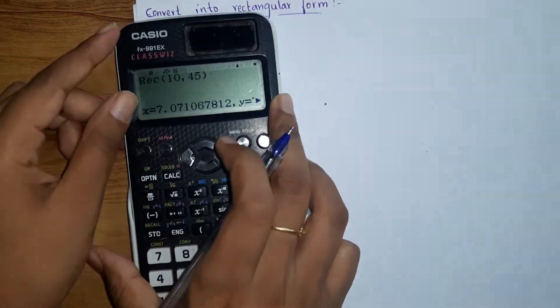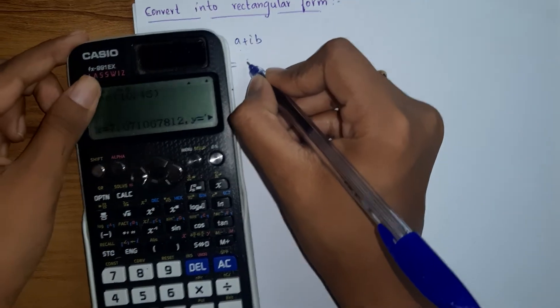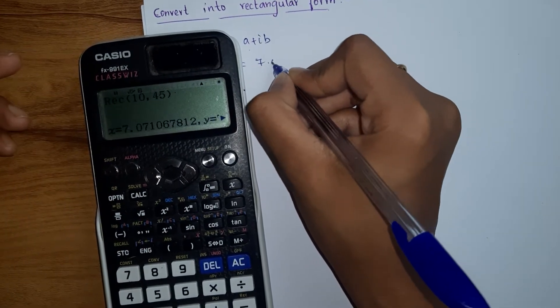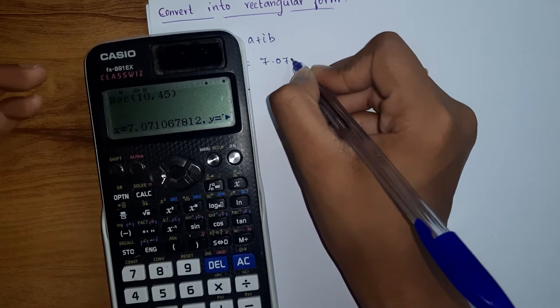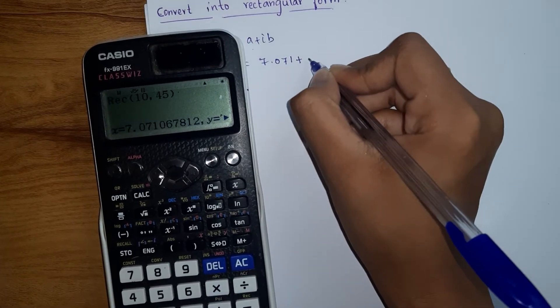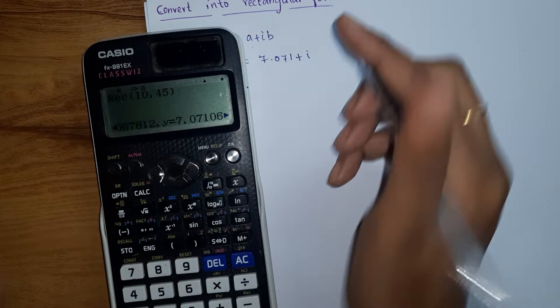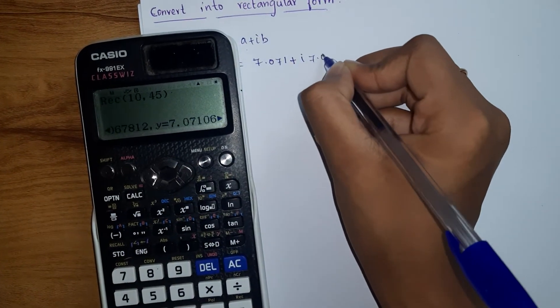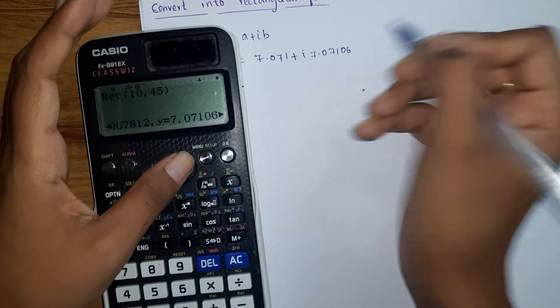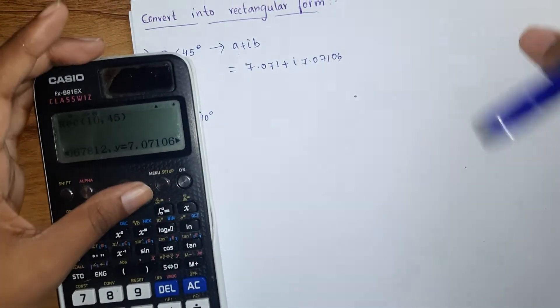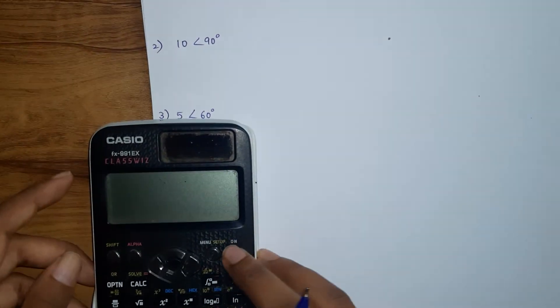Seven point zero seven, okay, three units or something is enough, plus i, then seven point zero seven one zero six. So this is our rectangular form.